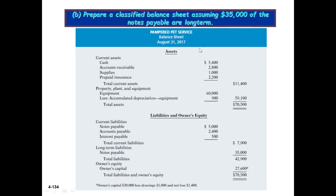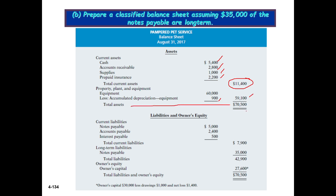Now we prepare a classified balance sheet, assuming $35,000 of the notes payable are long-term. Current assets include cash, accounts receivable, supplies, and prepaid insurance — giving us the total current assets. Then we have equipment less accumulated depreciation, which gives the total assets figure.